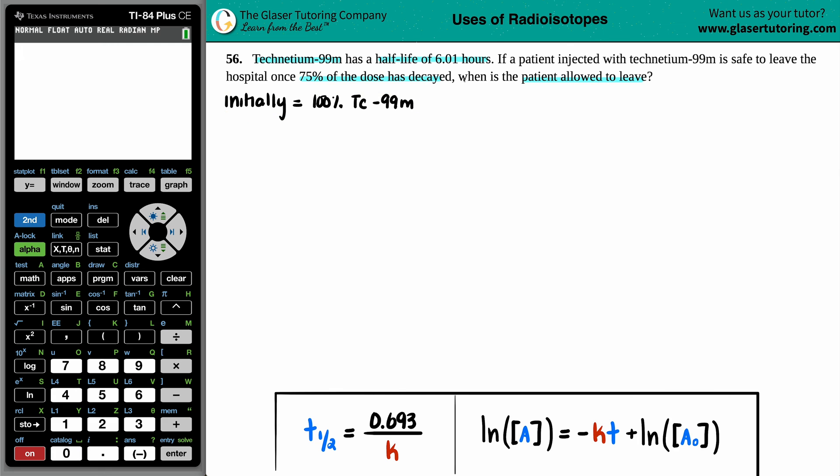Now, the question is asking for when. When can the patient be allowed to leave? When somebody asks when, they're always asking for a certain amount of time. When's your birthday? When are you going out? When is the movie? So when, they're looking for a time value here. So they're looking for a lowercase t. But now the question is, they gave me numbers. They're giving me a half-life. What formulas do I use?